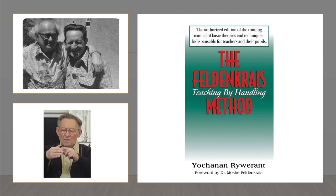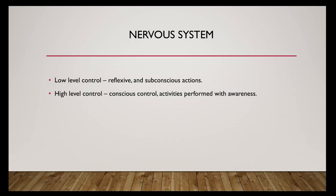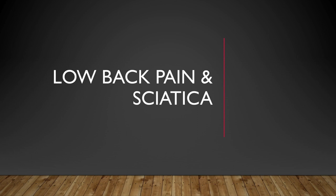The approach was described in the book by Johann and Reiver, one of the senior Feldenkrais trainers, a book called Teaching by Handling. In the book, Johann describes different levels of control of our nervous system. Low level of control represents subconscious reflexive activity, and the higher level of controls represent actions with awareness.